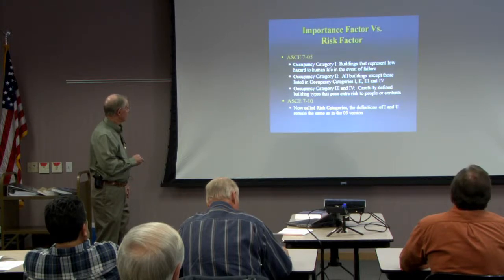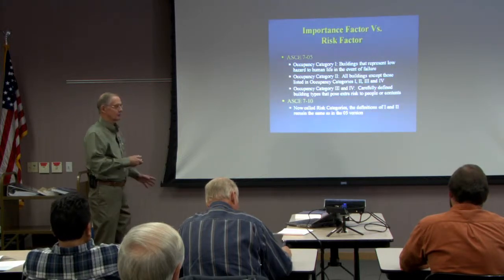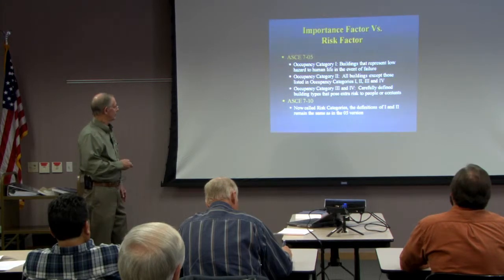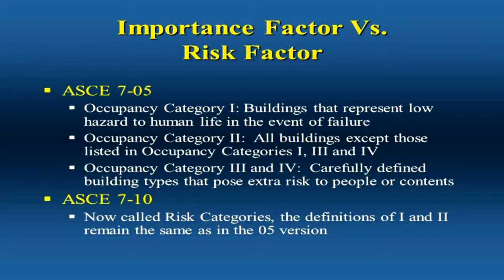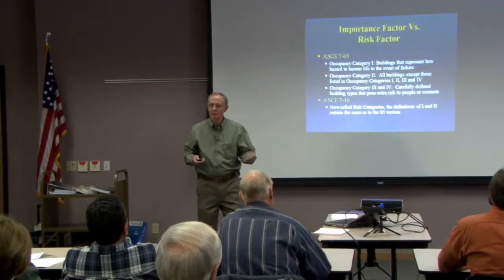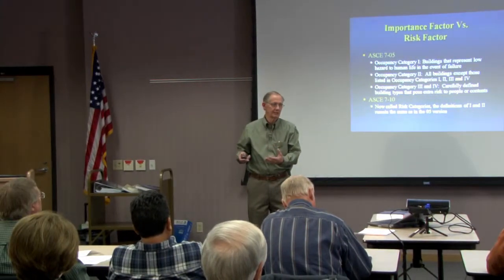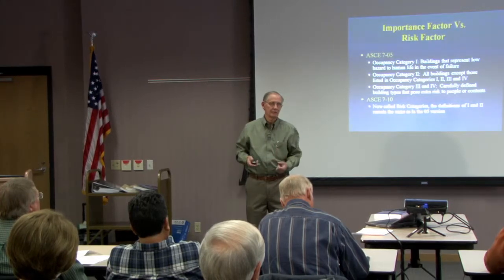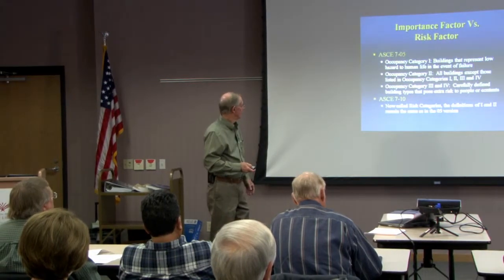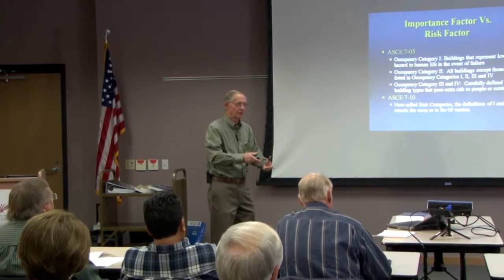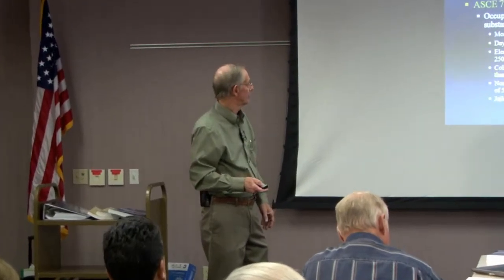We have a lot of carefully defined building types that pose extra risk to people or contents of the building. In ASCE 7-10, they're now called risk categories. The definitions of 1 and 2 remain the same as in the 05 version — agricultural buildings and buildings that do not house people and create little risk to occupants are category 1, and buildings that don't fall into either extreme are category 2. It's the definitions of 3 and 4 that change.